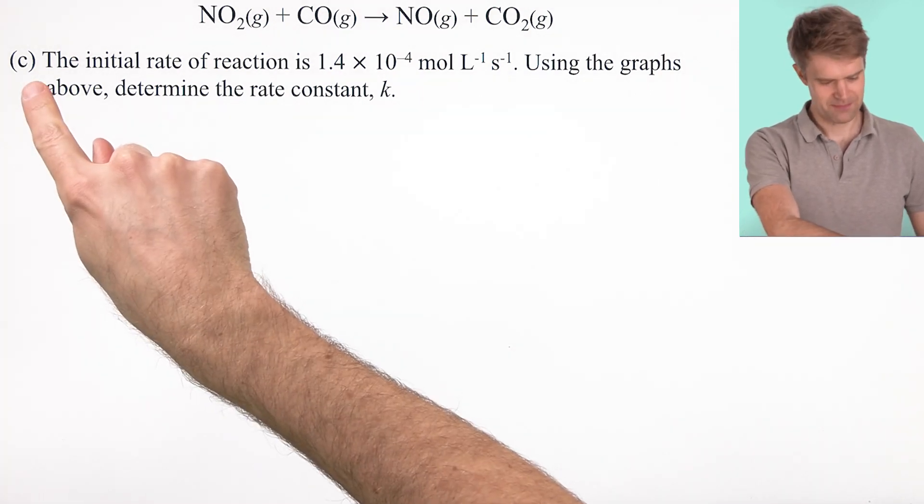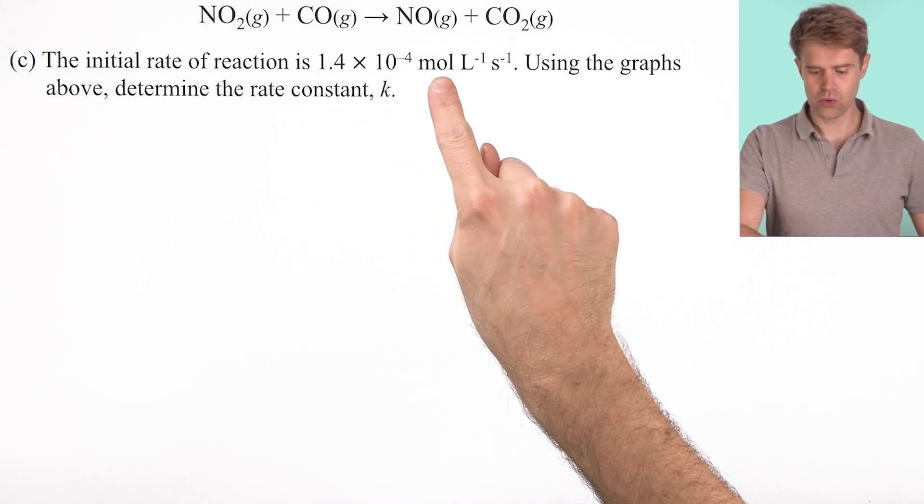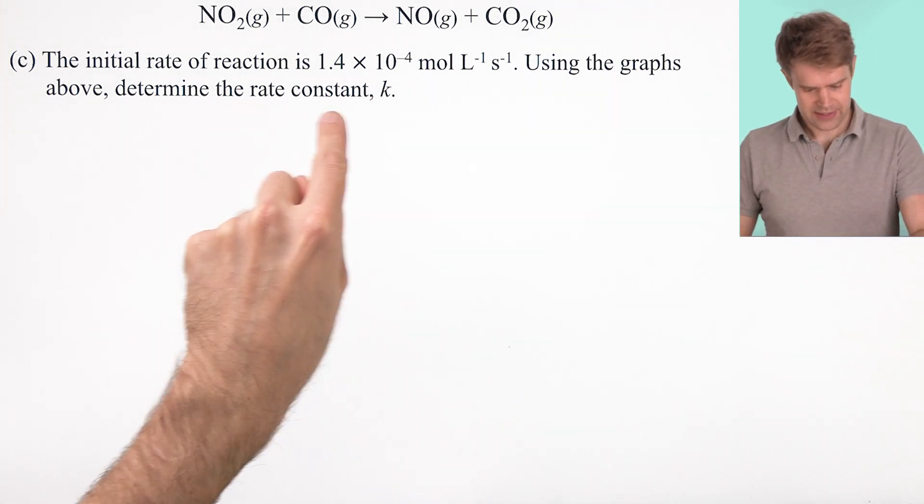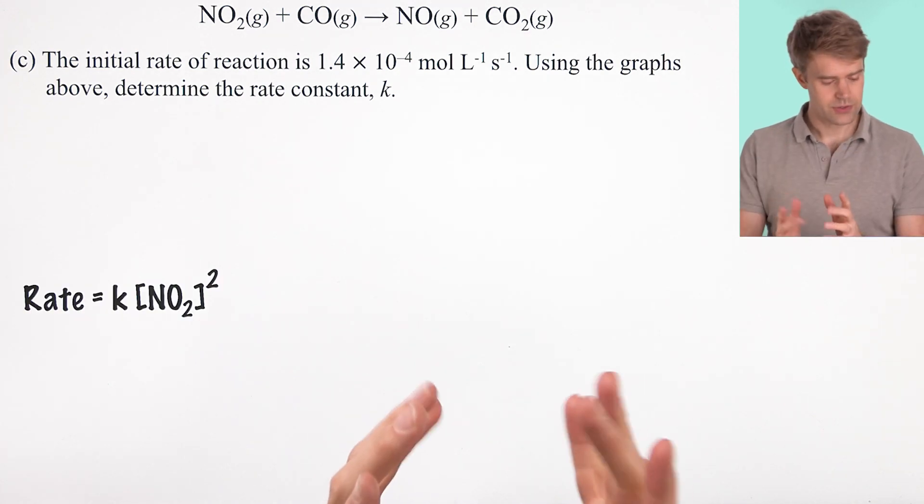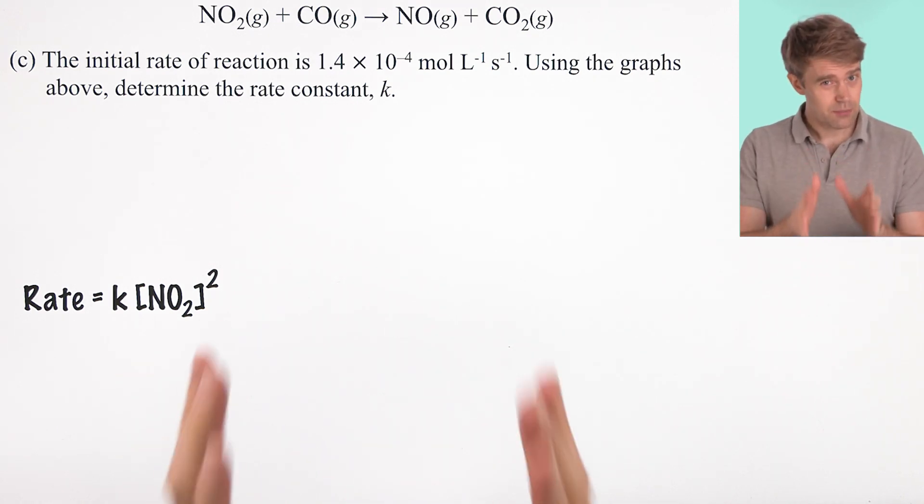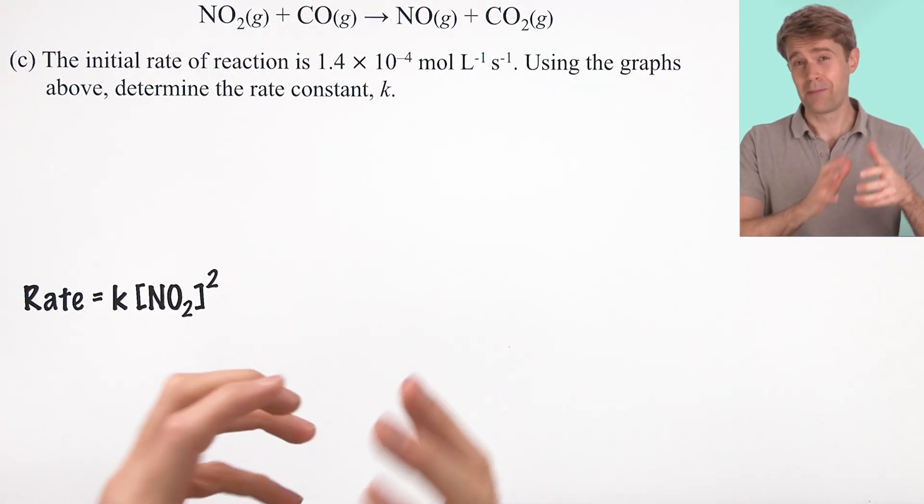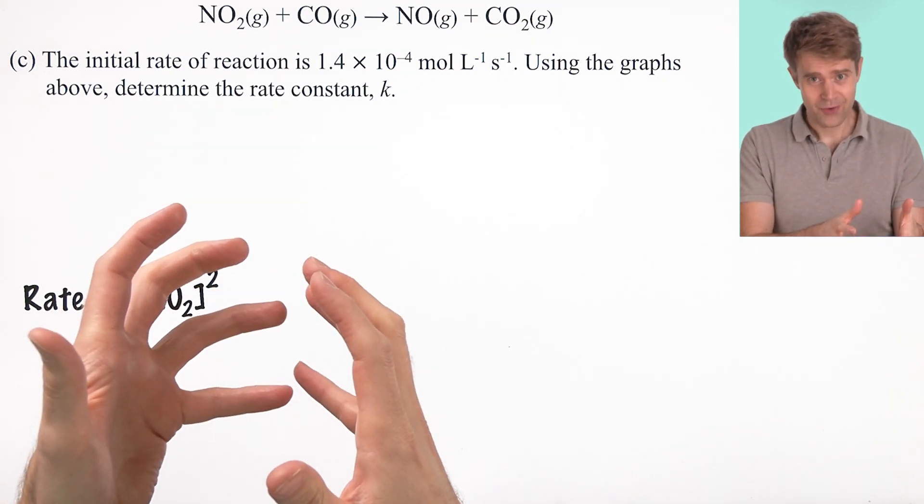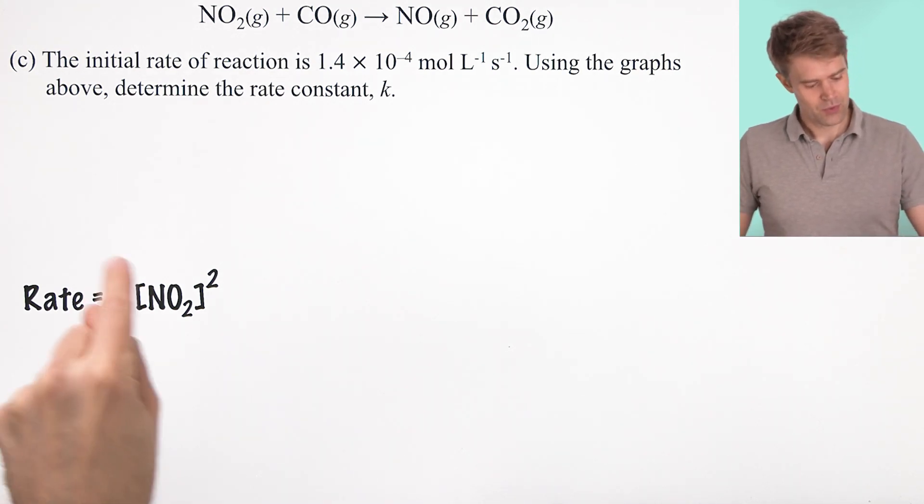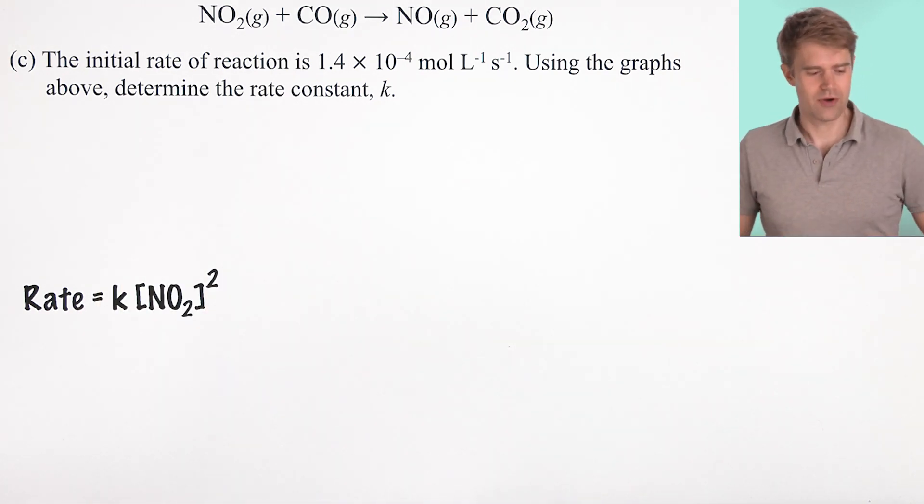Part C. The initial rate of reaction is 1.4 times 10 to the negative fourth moles per liter seconds. Using the graphs above, determine the rate constant, K. To solve this, we need the rate law that we determined in part B. And you can see that sometimes the parts of a free response question are interrelated. For this problem, part A was about reaction order, which led to part B, where we wrote a rate law equation. And now, in part C, we're solving for K in that equation. So be sure to work carefully as you work through the various steps.